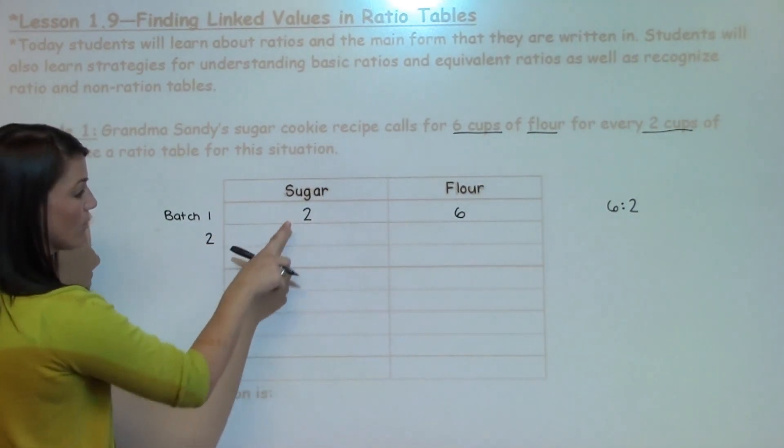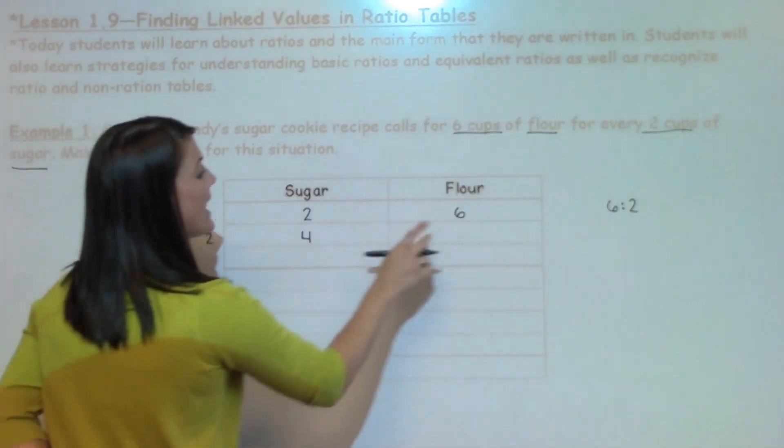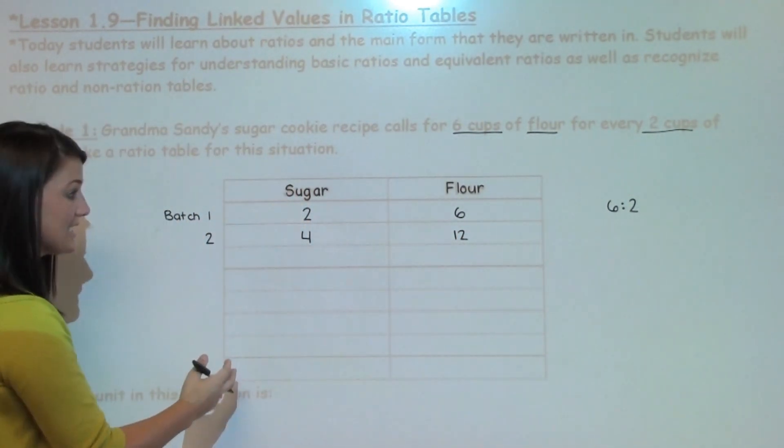In batch 2, I would need 4 cups of sugar to make 2 batches and 12 cups of flour. So it keeps increasing as it moves down.